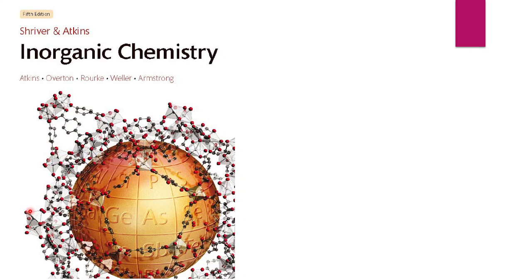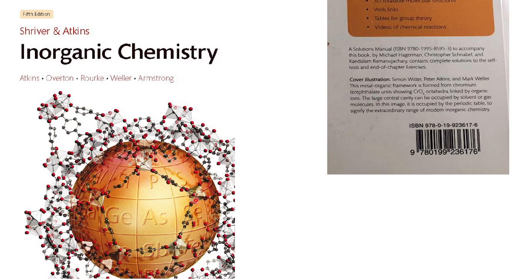This is an Inorganic Chemistry text. You can see a picture like a globe on the cover, which actually represents the periodic table. The cover illustration is a Metal Organic Framework formed from a Chromium Terephthalic unit, showing CrO6 octahedra linked by organic ions. The name is Metal Organic Framework — there is a metal, an organic group, and they form a framework. This is Chromium Terephthalic Acid, a ligand.